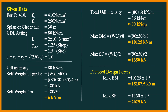We round up to 90 kN/m for convenience. Maximum bending moment = WL²/8 = 10,125 kN·m at midspan. Maximum shear force at supports = WL/2 = 1,350 kN. These are service load values. After applying the load factor of 1.5: factored maximum bending moment = 15,187.5 kN·m, and factored maximum shear force = 1,350 × 1.5 = 2,025 kN.